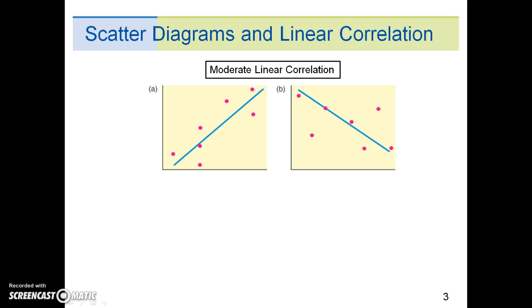If the points seem close to a straight line, we say that the linear correlation is moderate to high depending on how close the points lie to the line.